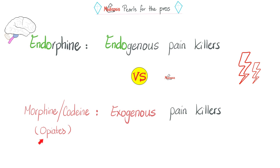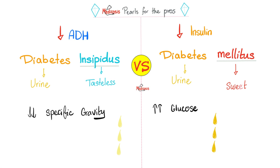What's the difference between endorphin and opiates like morphine and codeine? Endorphin is endogenous — it's natural; your body makes it naturally. Endorphin is your natural, endogenous, intrinsic painkiller. The pharmaceutical equivalent includes morphines, codeines, and all the opiates — these are exogenous painkillers.